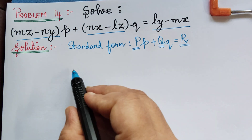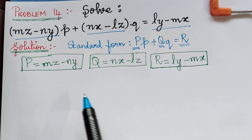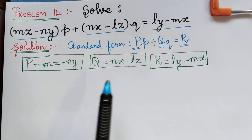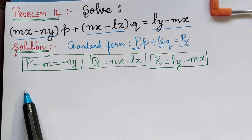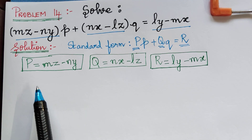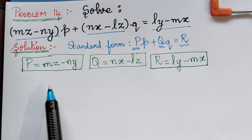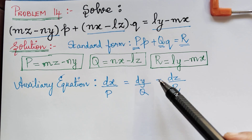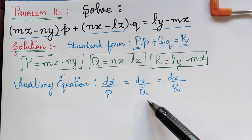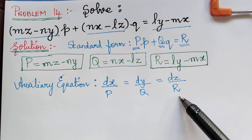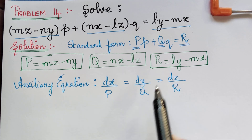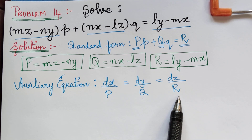So let us write the values of P, Q and R. After writing the values of P, Q and R, we have to write the auxiliary equation. The auxiliary equation for Lagrange's type is given by dx by capital P equals dy by capital Q equals dz by capital R. Now we shall substitute the values of P, Q and R in this auxiliary equation.